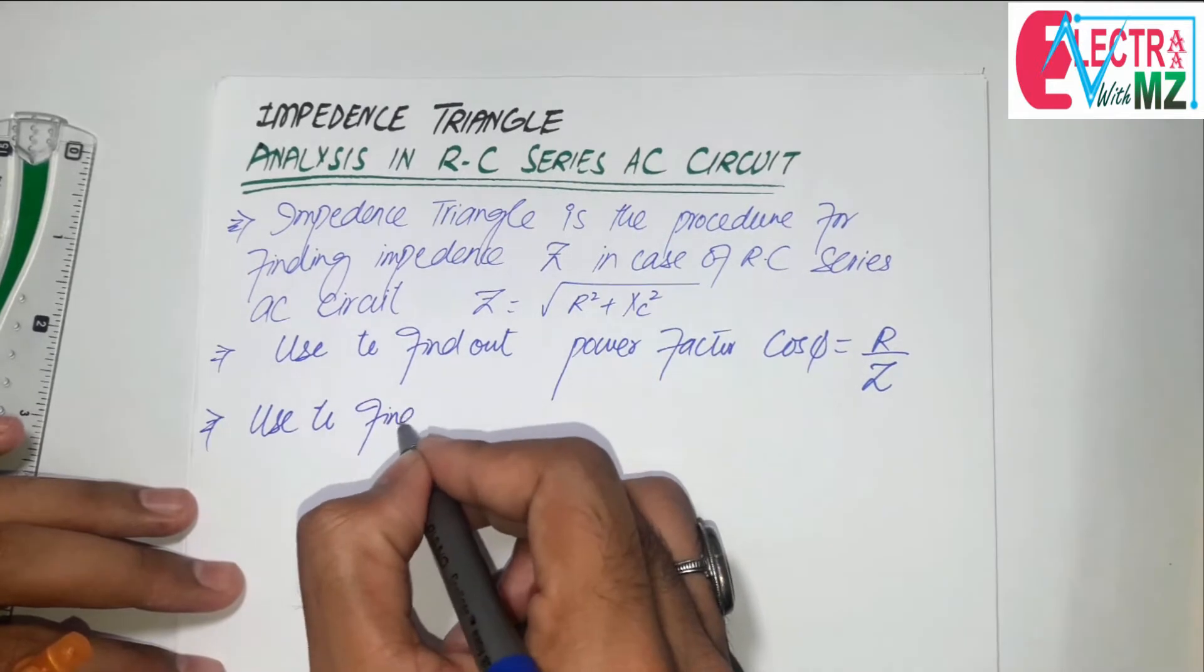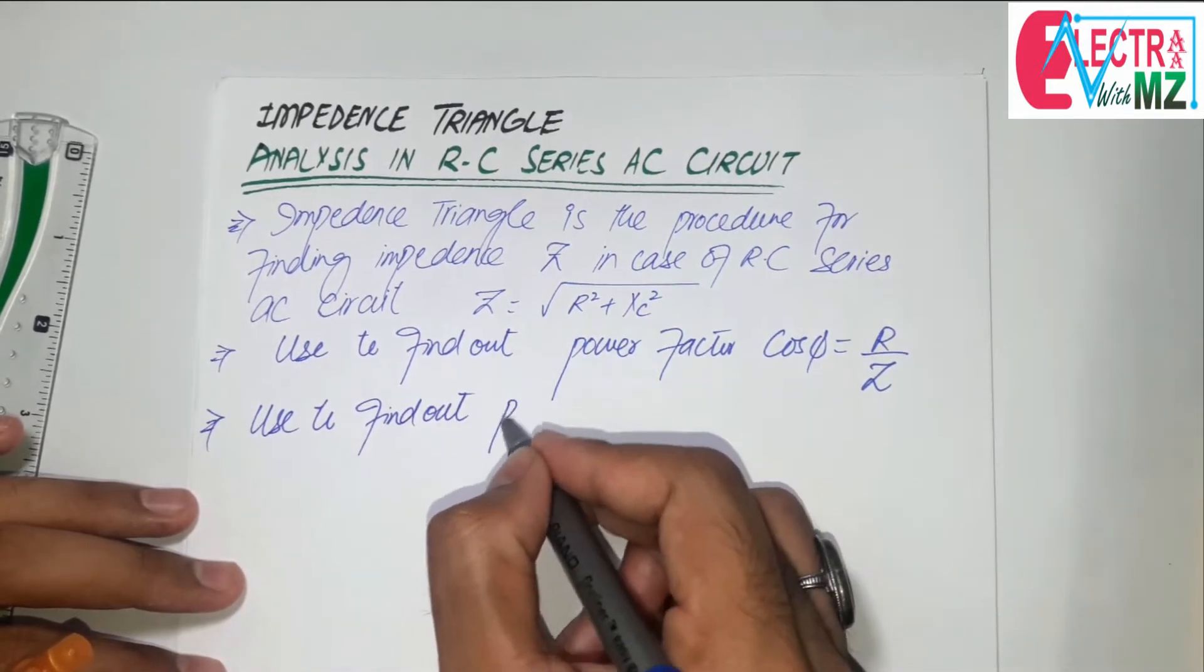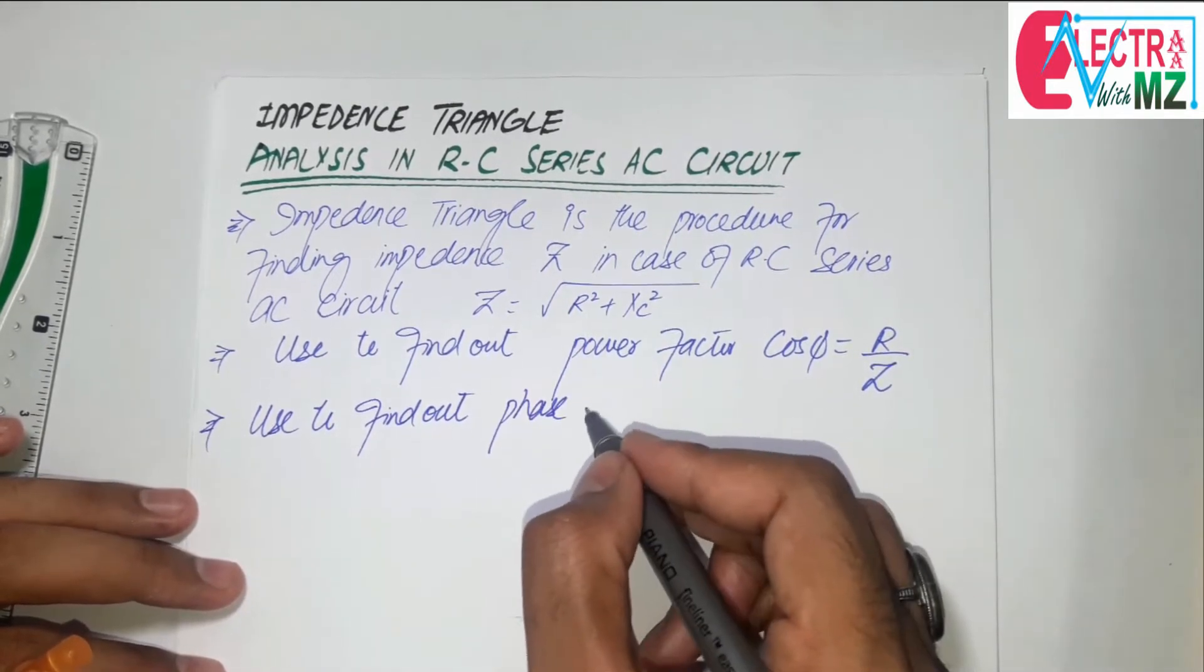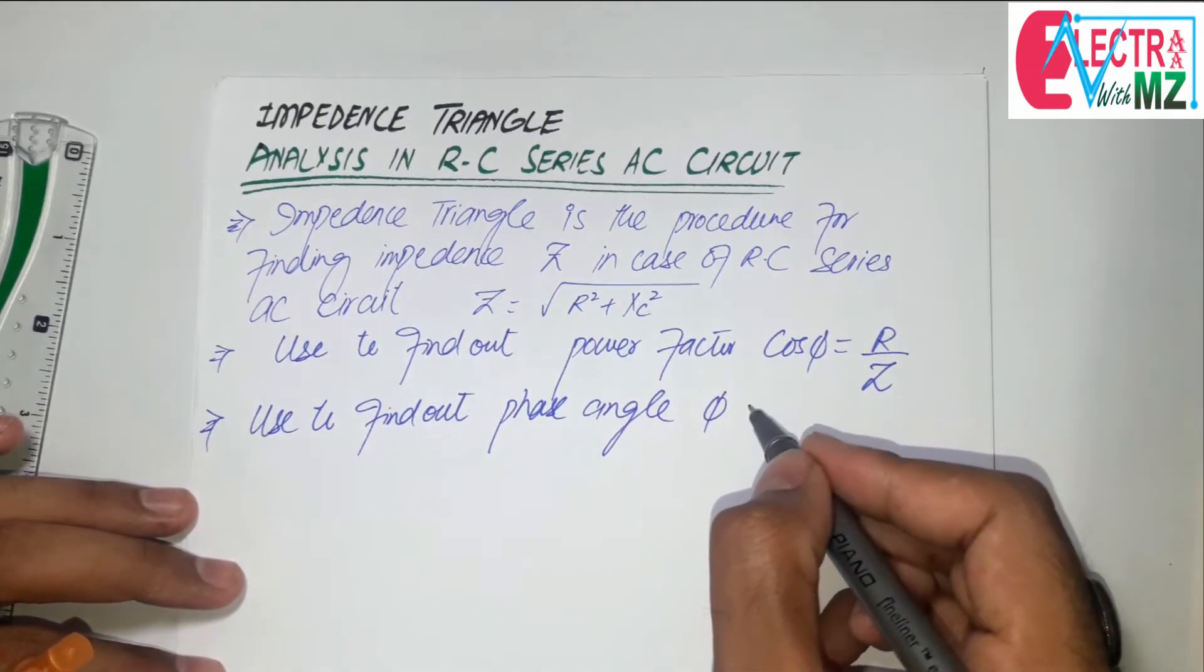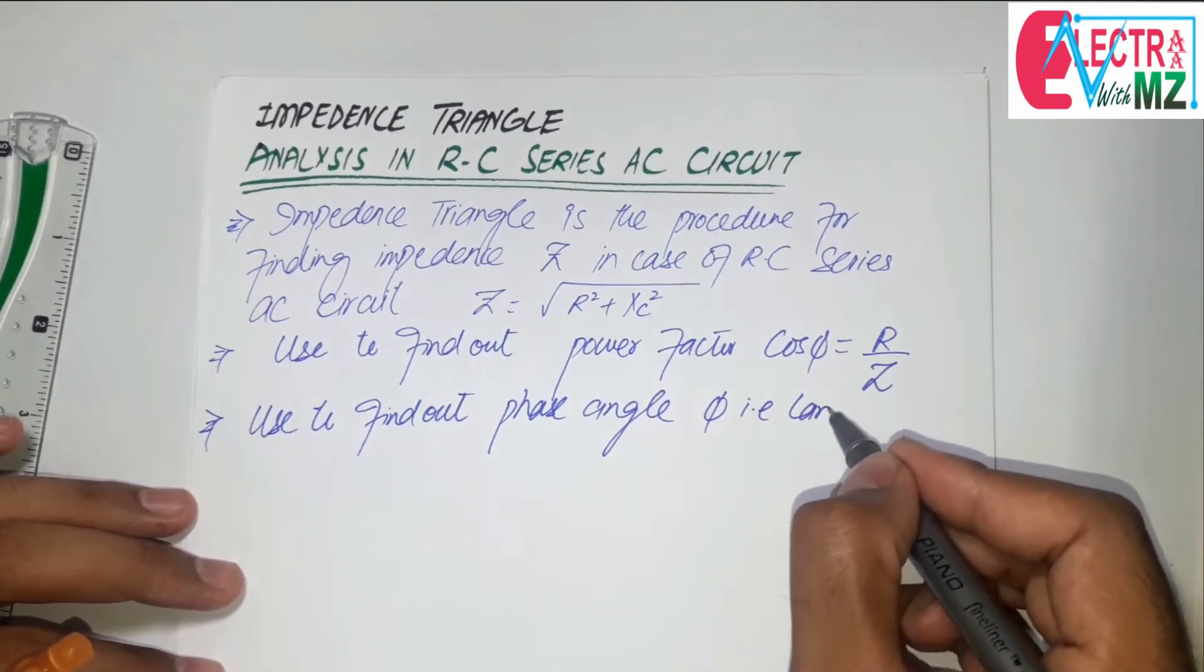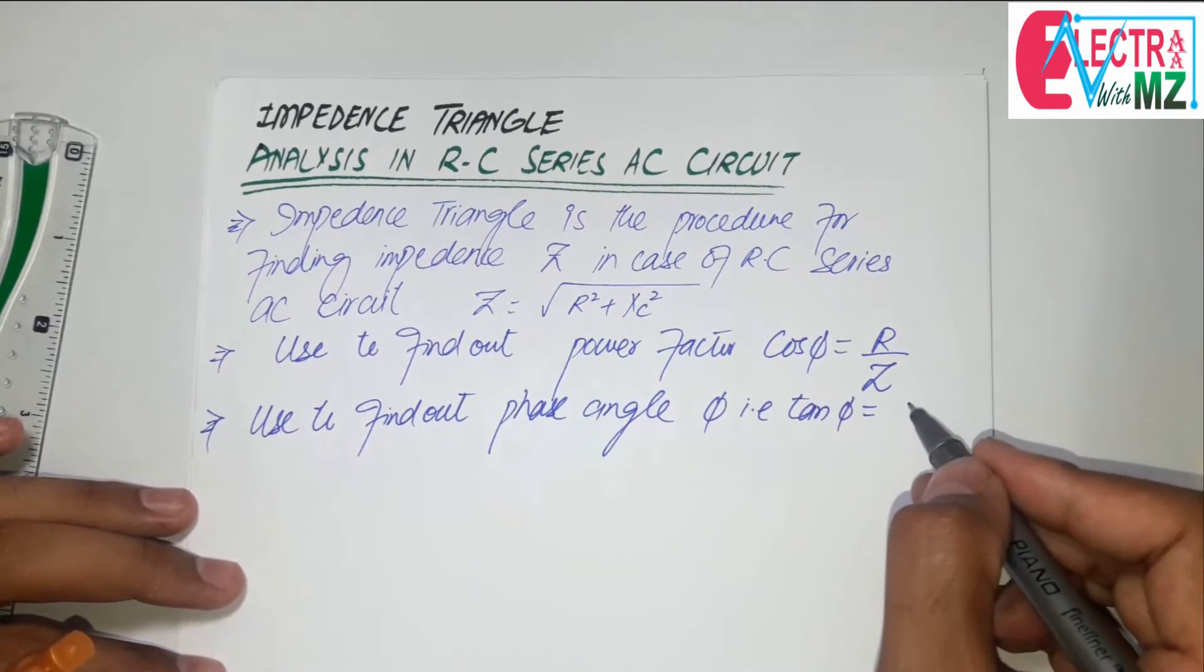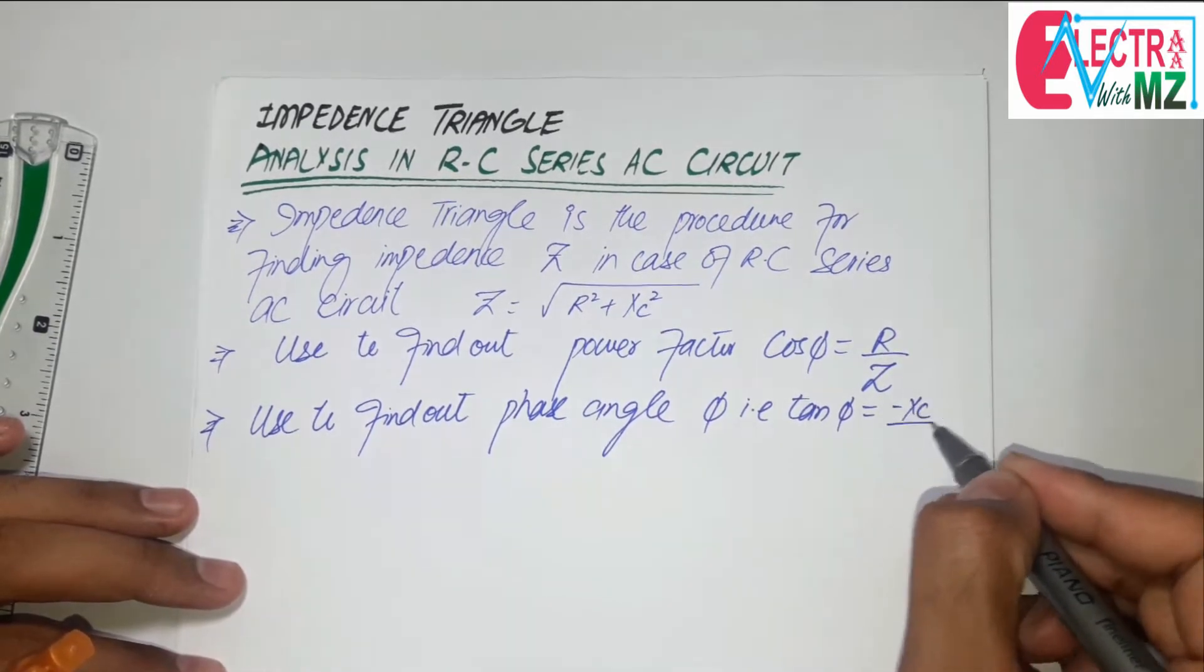Used to find out phase angle phi, i.e., tangent phi is equal to minus XC over R.